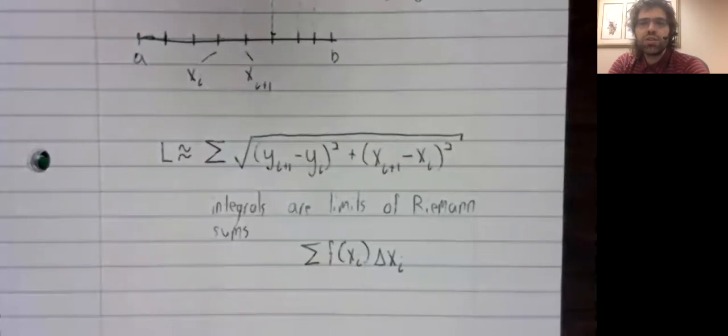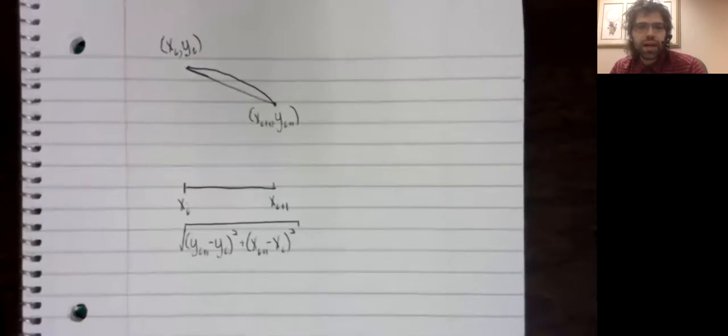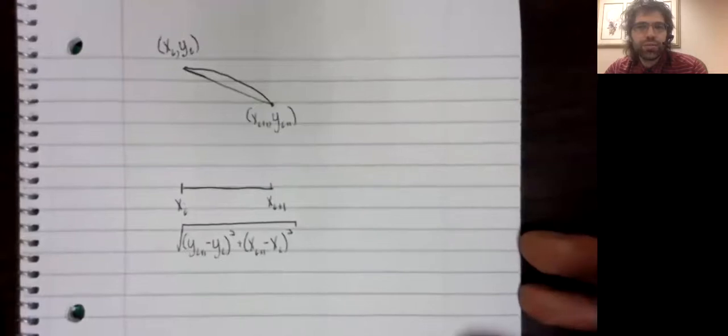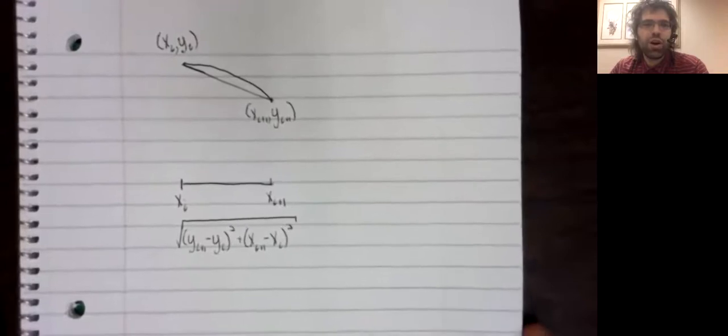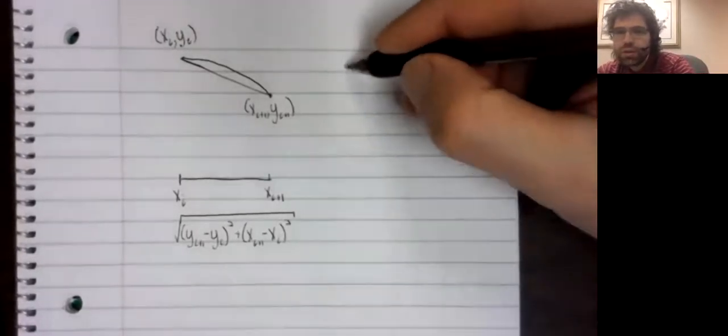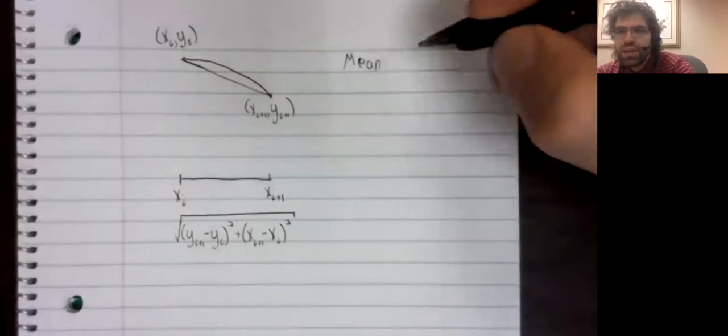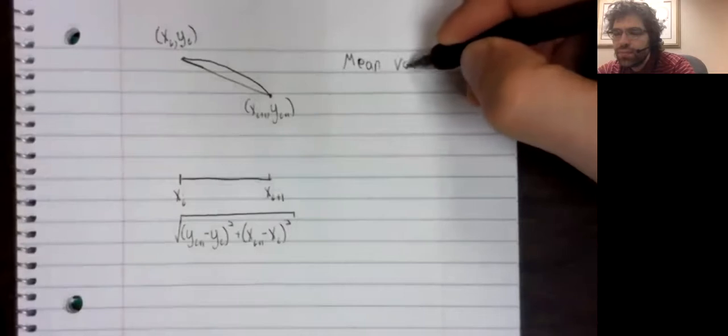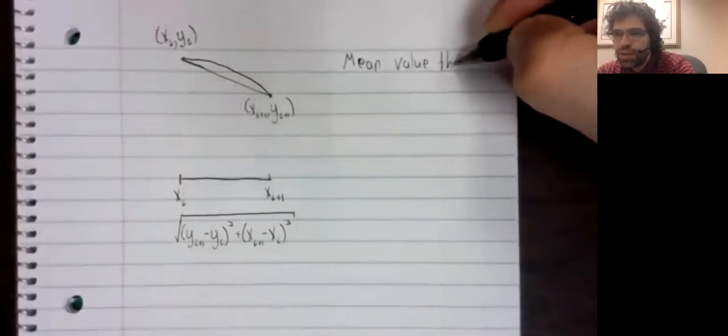So we can't take a limit to turn this into an integral. What to do? Here is what we have. And the trick we are going to use here is perhaps not a very obvious one. We are going to use the mean value theorem.